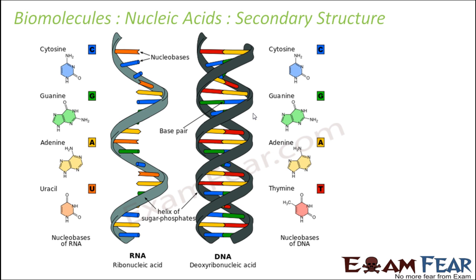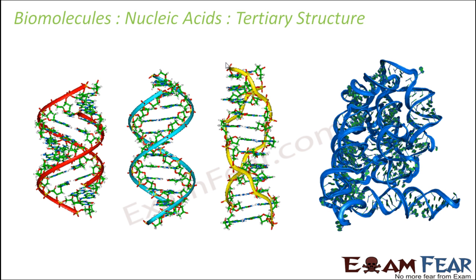The secondary structure comes into picture when the primary structure gets coiled due to interactions among the bases. Adenine always interacts with thymine and guanine always bonds with cytosine. This interaction between the bases leads to a coiled or helical structure. In RNA, this is a single-stranded helical structure; in DNA, it is a double helical structure known as a double helix. The tertiary structure gets further folded: as interaction increases, folding increases and the complexity of the structure also increases accordingly.